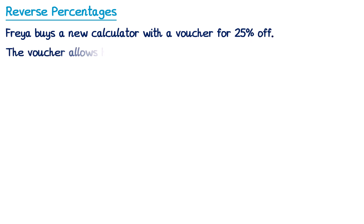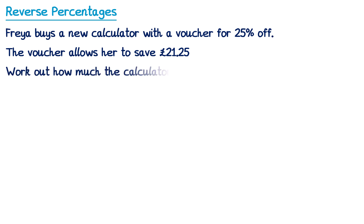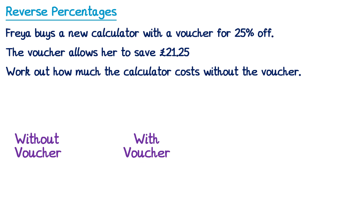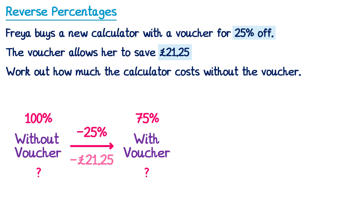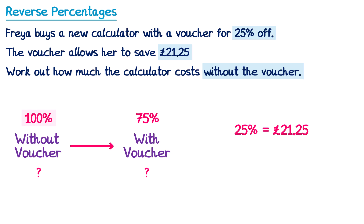Freya buys a new calculator with a voucher for 25% off. The voucher allows her to save £21.25. Work out how much the calculator costs without the voucher. Without the voucher is 100%, and with the voucher is 75%. The £21.25 saving represents the 25% reduction. So 25% equals £21.25. To get from 25% to 100%, multiply by 4. £21.25 multiplied by 4 is £85. The calculator costs £85 without the voucher.